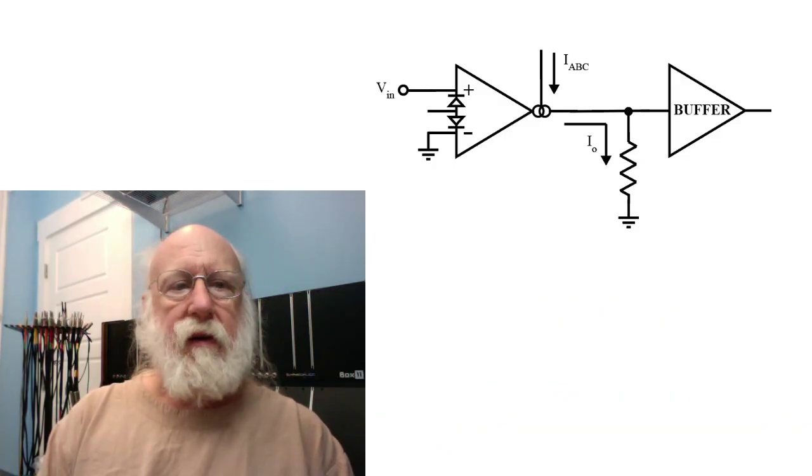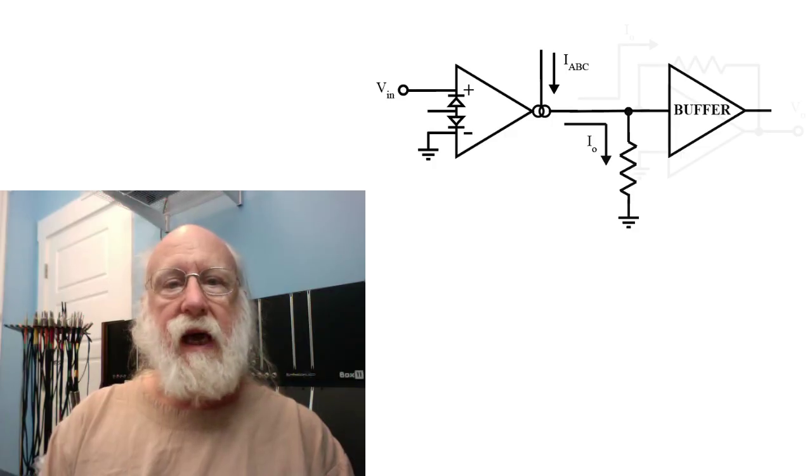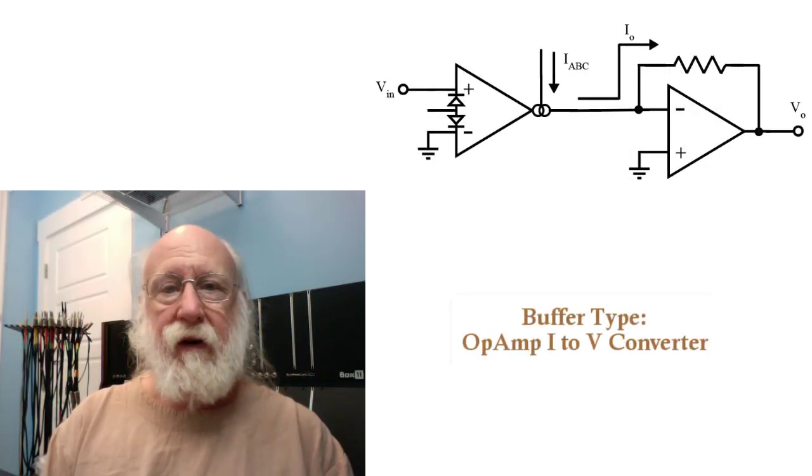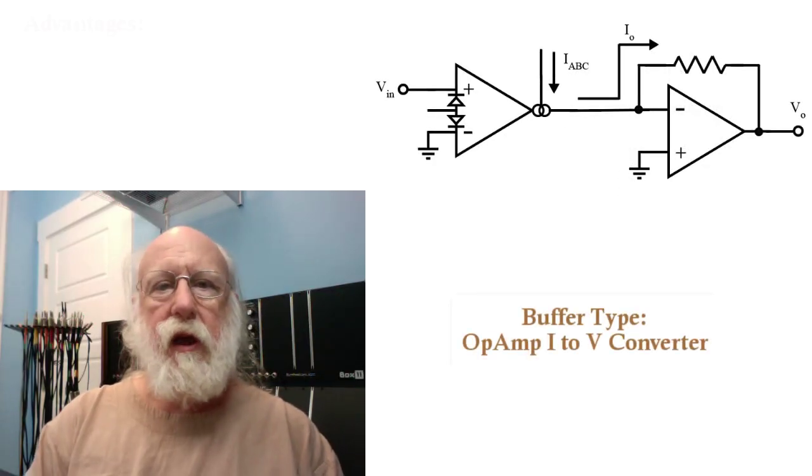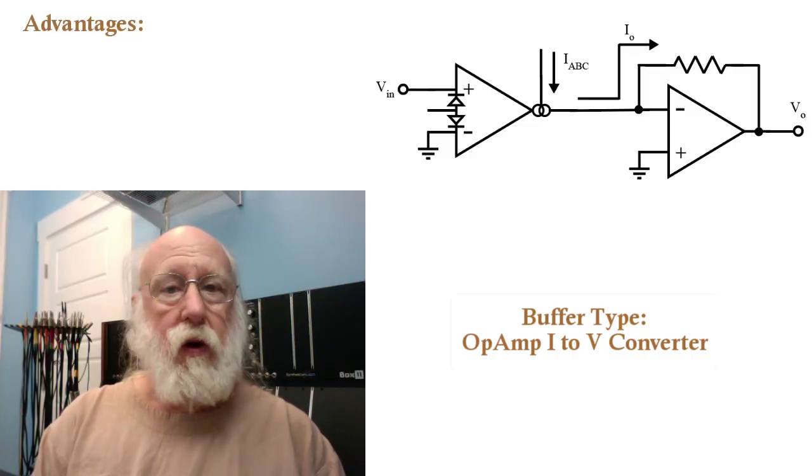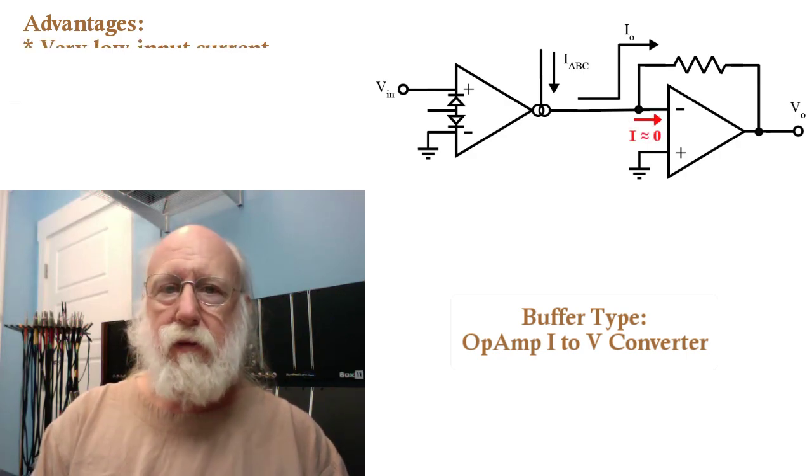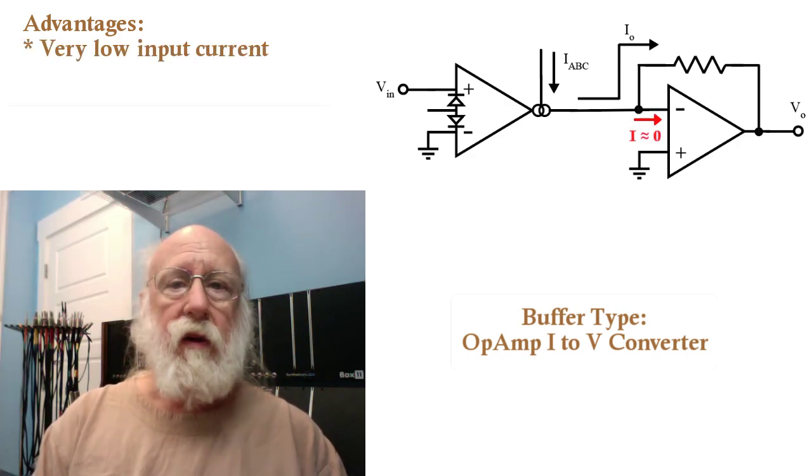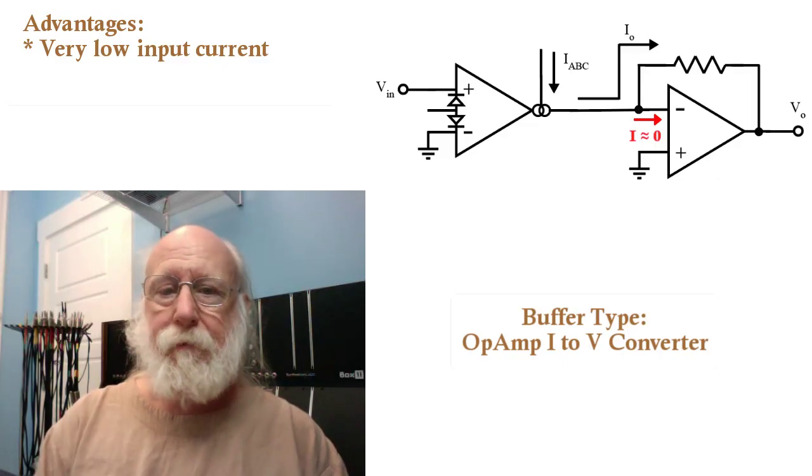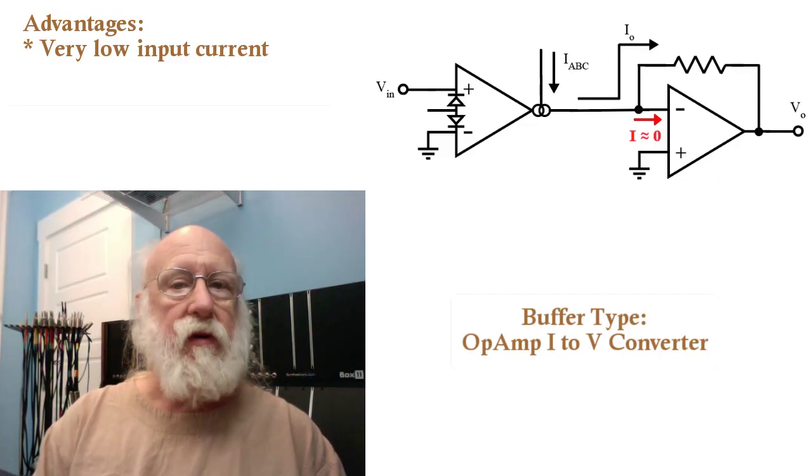The other option uses instead an op amp connected as a current to voltage converter. The advantages here are that, assuming you're using an FET input op amp, the current stolen by the op amp itself is very small. So essentially, all of that output current goes through the feedback resistor. And secondly, just as with the op amp voltage follower, this scheme does not add an offset to your output voltage.